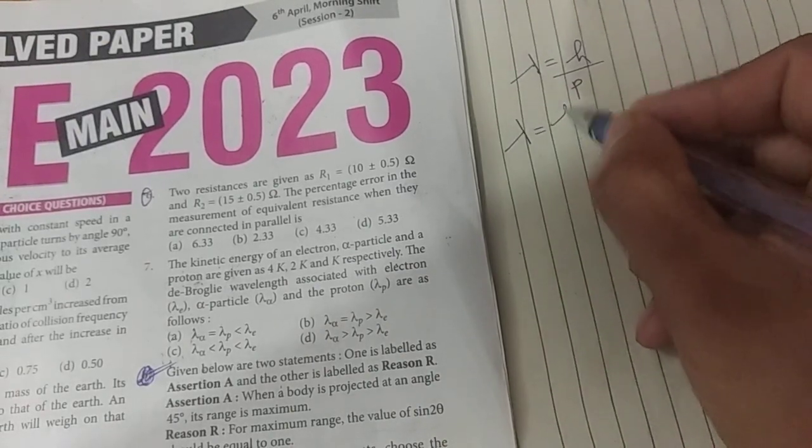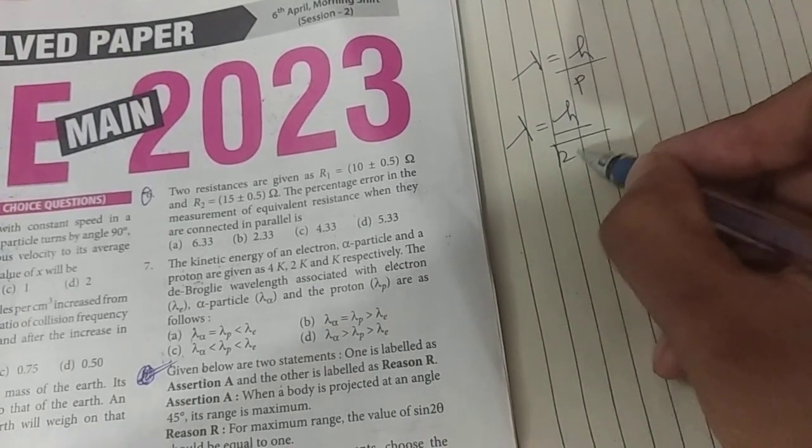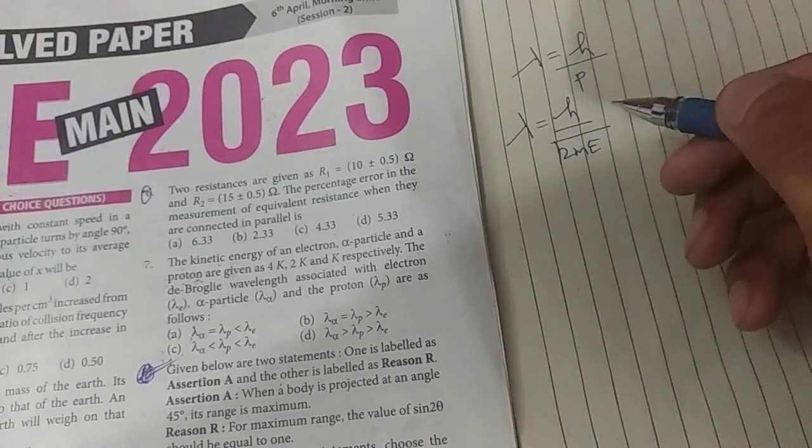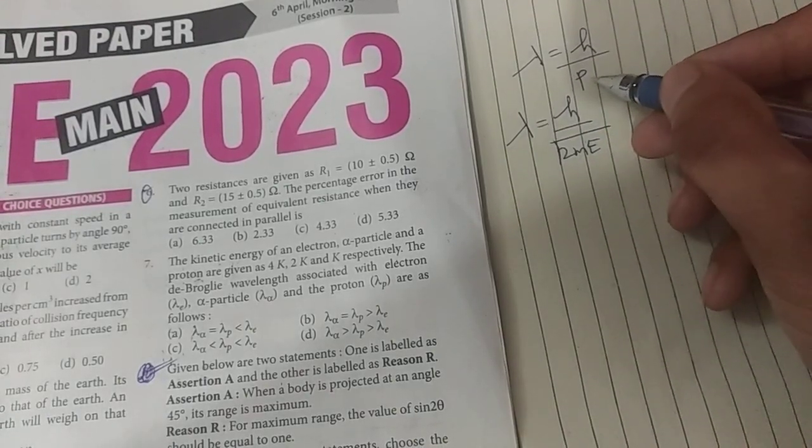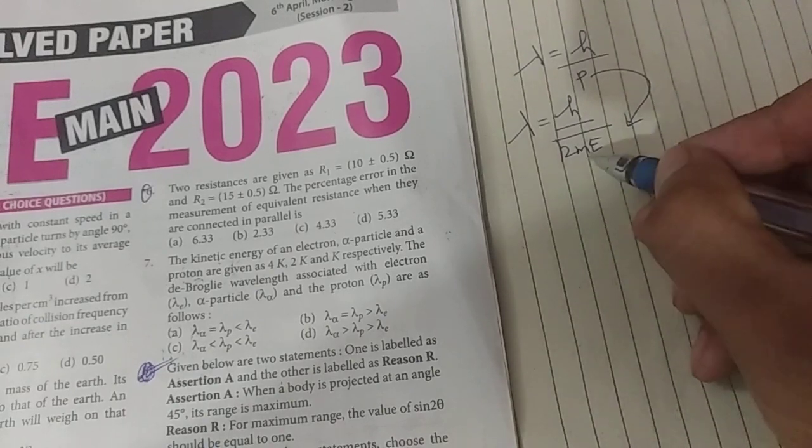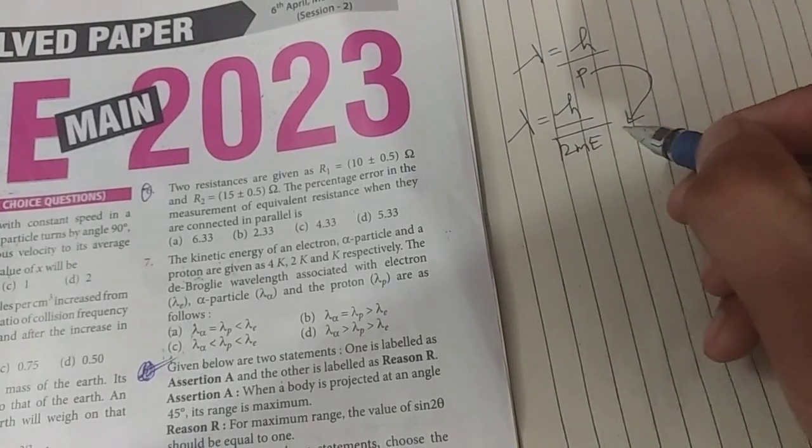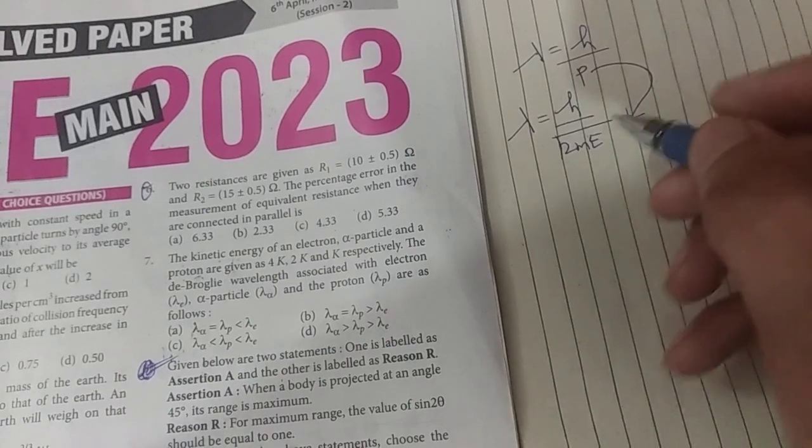So first, I will write momentum in kinetic energy terms because here I have given the kinetic energy. So the expression of momentum is root 2m into capital E, i.e. kinetic energy. This is the relation of momentum in terms of kinetic energy.